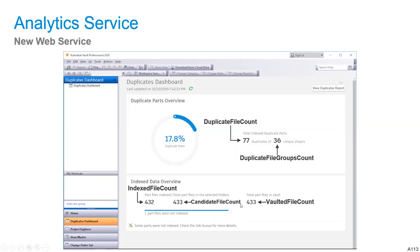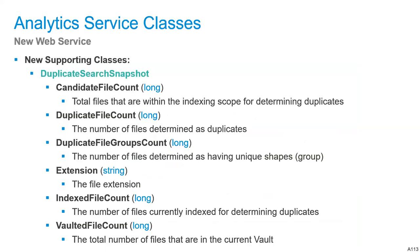The Vaulted File Count on the far right is simply a total count of all files inside your vault currently. All of these fall inside the Duplicate Search Snapshot class. There is also an Extension property which simply identifies which file extension was processed for this snapshot.